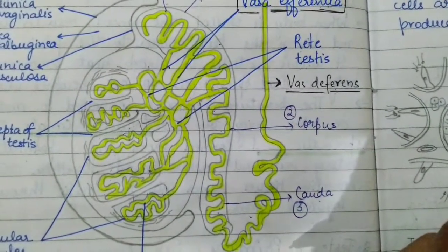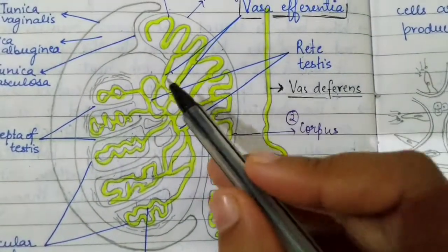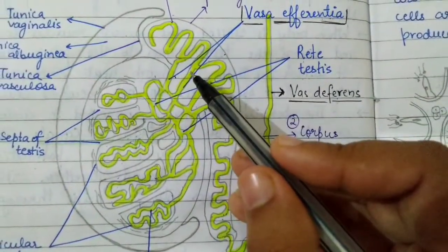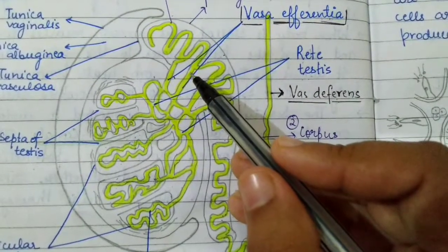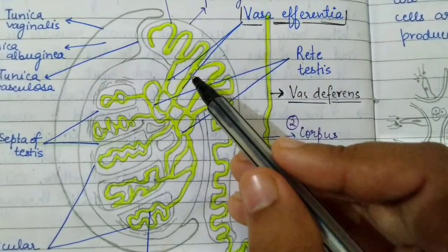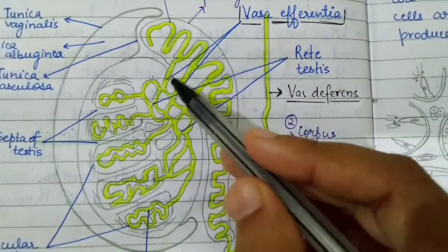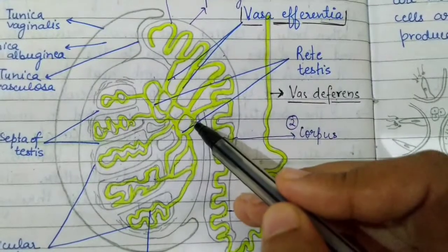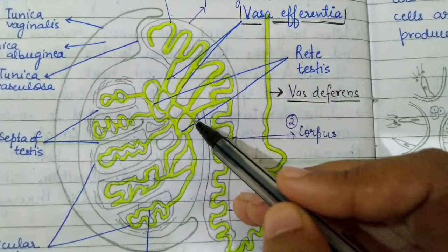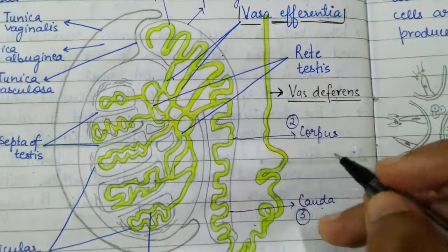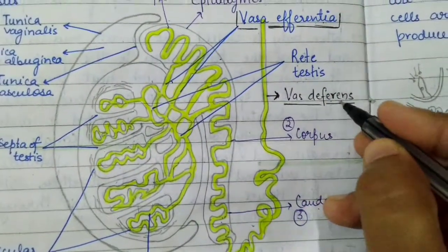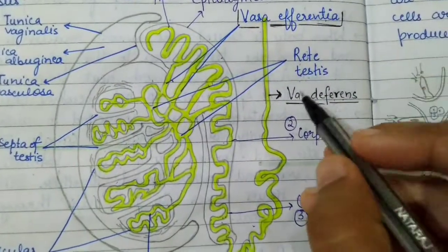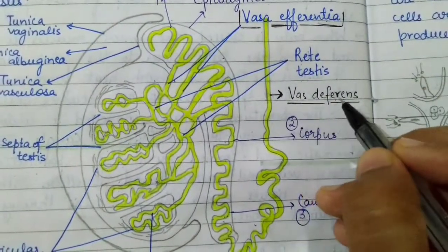The second difference is in number. Vasa efferentia vary from 15 to 20 in number, whereas vas deferens is a single tube — one in number.